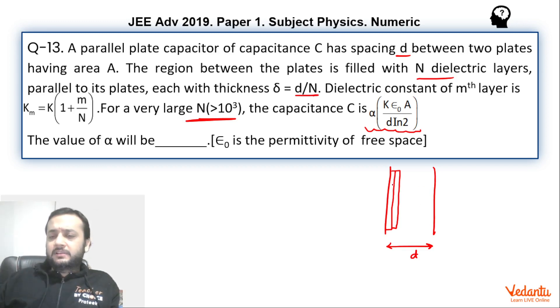It will become so thin that our eyes will not be able to resolve them as two different dielectrics. For example, if I am looking at two different dielectrics, I will not be able to resolve them as separate if they are so thin, right? So we can consider this whole system as a continuous system rather than a discrete one.